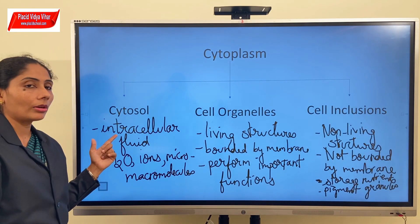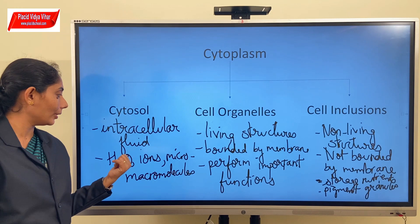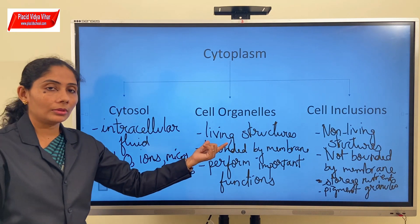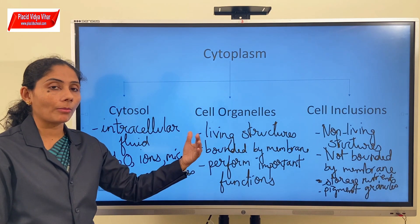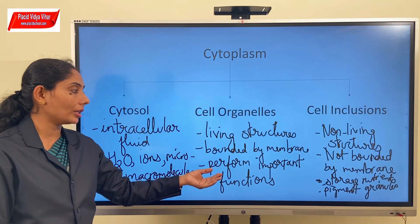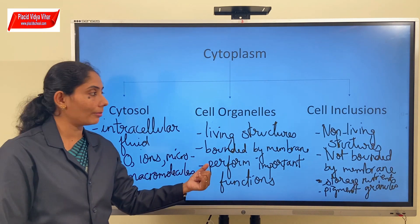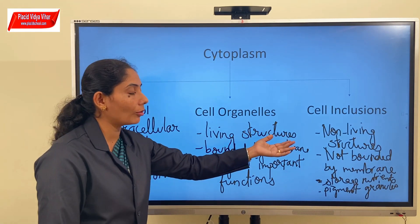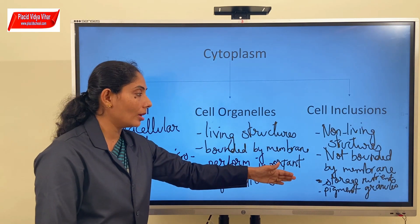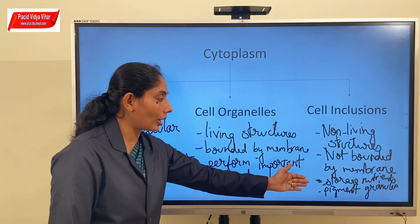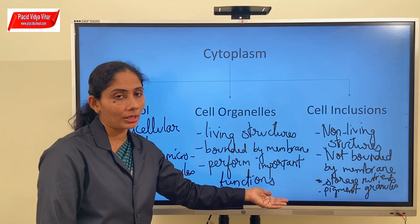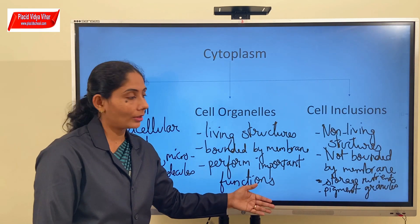So cytoplasm comprises of three important things: the cytosol, cell organelles, and cell inclusions. Cytosol refers to the intracellular fluid. Cell organelles are subcellular living structures which perform important functions and may or may not be bounded by membrane. Cell inclusions are non-living structures, not bounded by membrane, which include storage nutrients such as glycogen or starch, some pigment granules, and crystals of some kind.